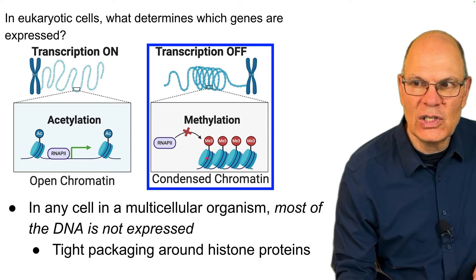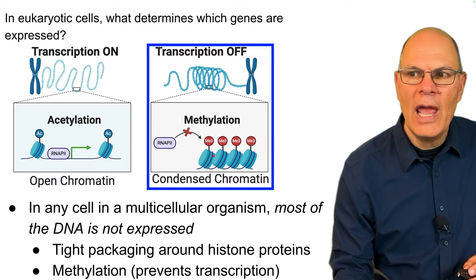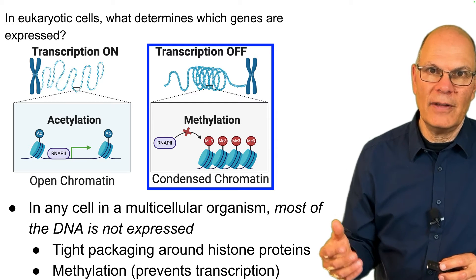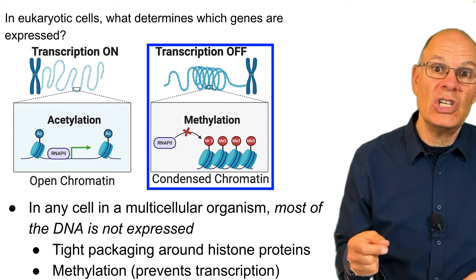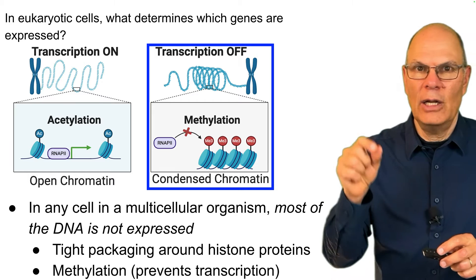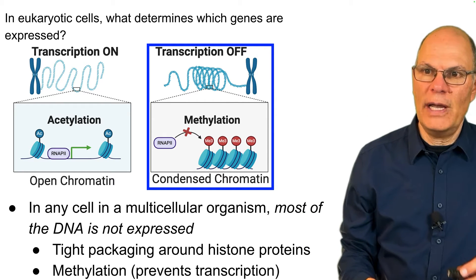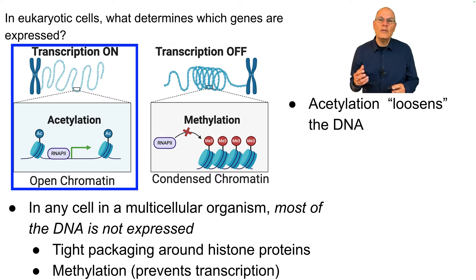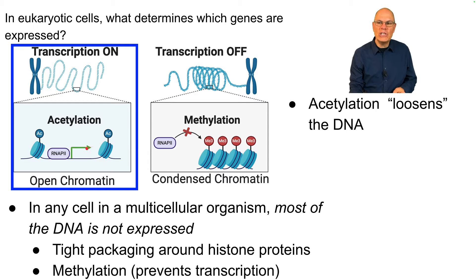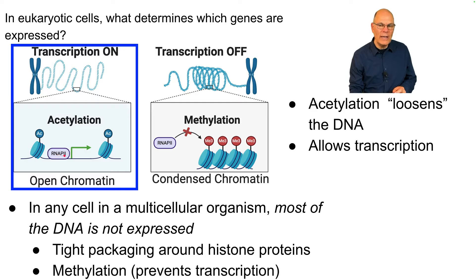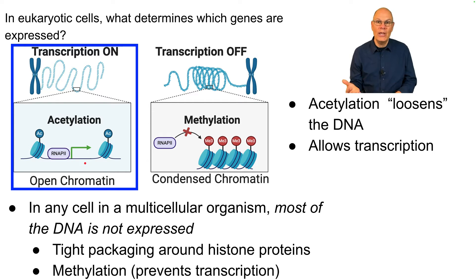Genes that are turned off are tightly packaged around proteins called histones — that's what these discs represent. There's an additional chemical modification called methylation: the addition of a methyl group (a carbon attached to three hydrogens) that prevents transcription. In the few genes within any cell that are turned on, there's a process called acetylation that loosens up the DNA, making it possible for RNA polymerase to come in, find the promoter, and transcribe the genes.